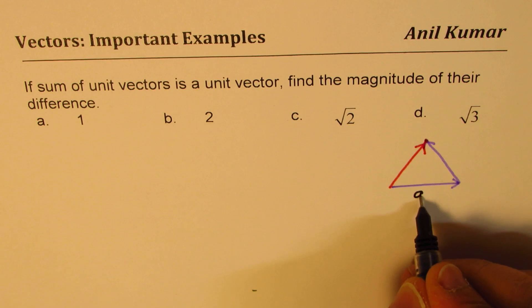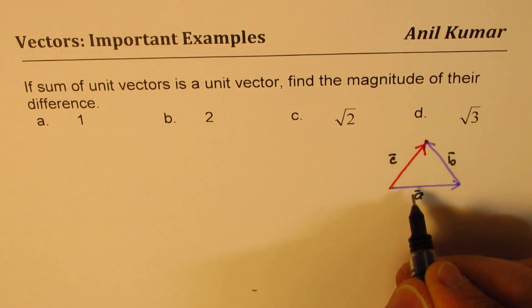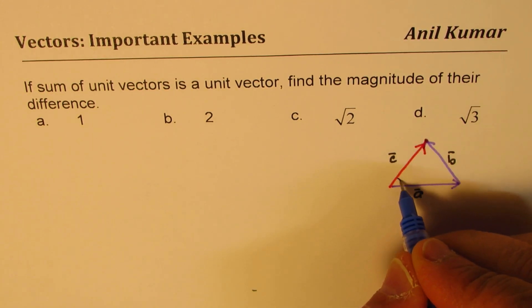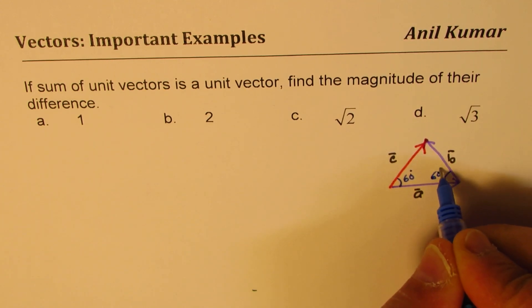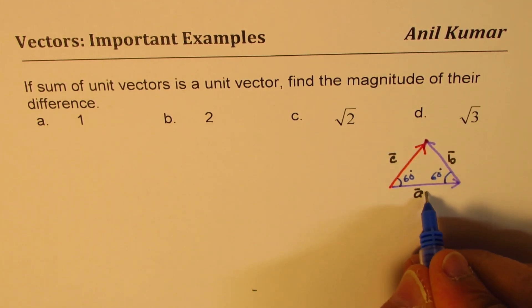So let's say this is our vector A, this is vector B. Then C will be a unit vector. It's an equilateral triangle. So in that case, this angle will be 60 degrees and this angle will also be 60 degrees. So that is the only case where all the unit vectors will be.